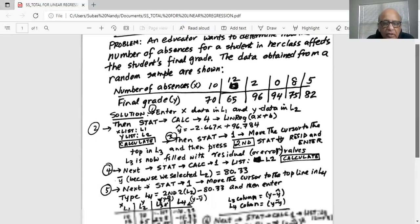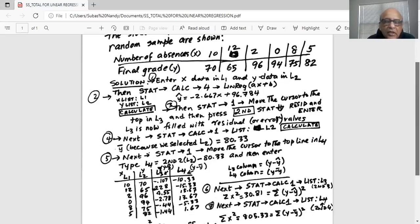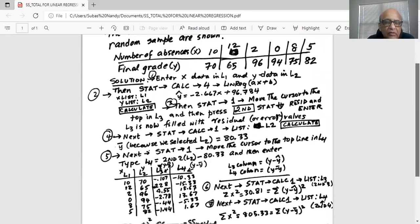Then step 4, we go to STAT, CALC 1. My list is L2, and I calculate. What I'm interested in is the mean value for L2, which will be shown as x bar, but is actually y bar, because in L2 we have entered y data previously. That mean value of y in this case is 80.33.